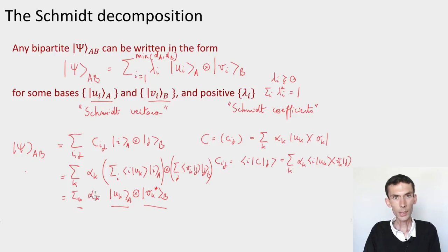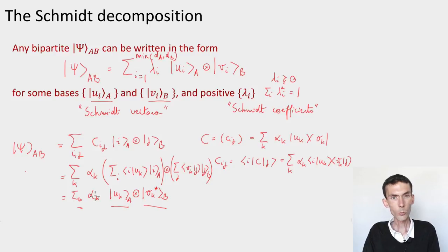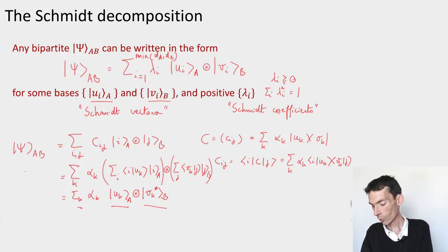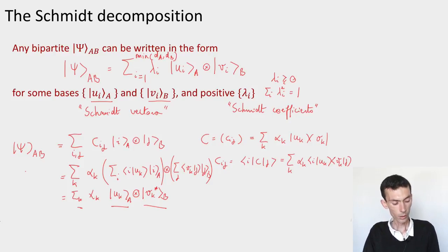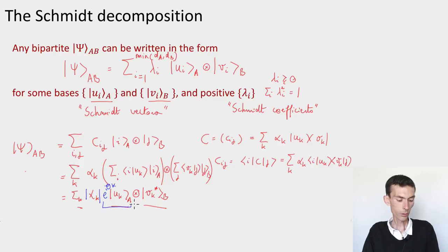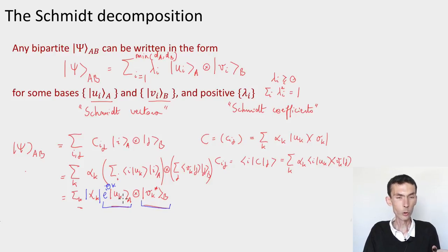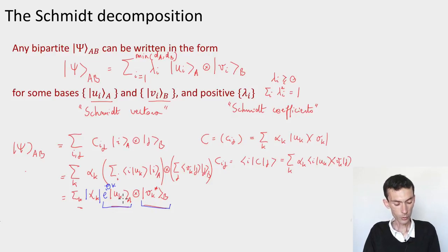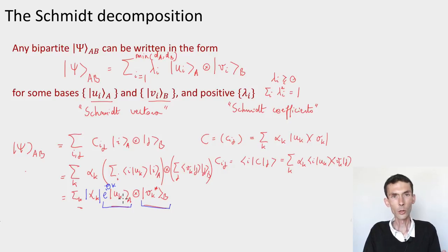The coefficients α_k are in general complex numbers, whereas Schmidt coefficients should be non-negative. The simple fix is to write their absolute value |α_k| and absorb the phase e^{iθ_k} into one of the Schmidt vectors. Since multiplying a basis vector by a phase still gives a valid basis, we've now written |ψ⟩ in exactly the form of the Schmidt decomposition.